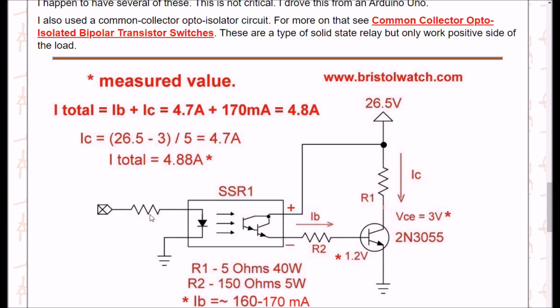All right, when I turned on SSR1, I had 1.2 volts drop from emitter-base on the transistor. Not good. So if you want to figure out your current, subtract 1.2 volts from 26.5, divide by 150, and I measured something between 160 to 170 milliamps. This was not very good either. Vce, voltage collector-emitter, was 3 volts.